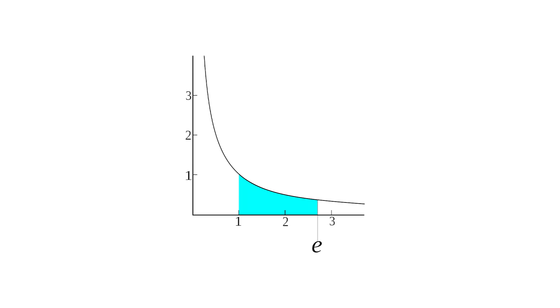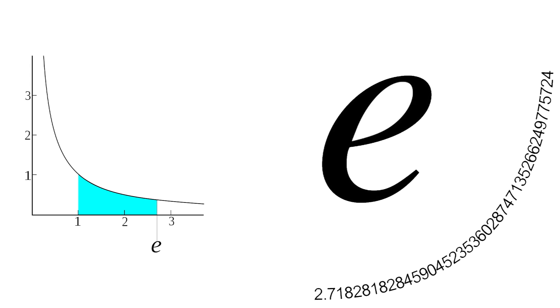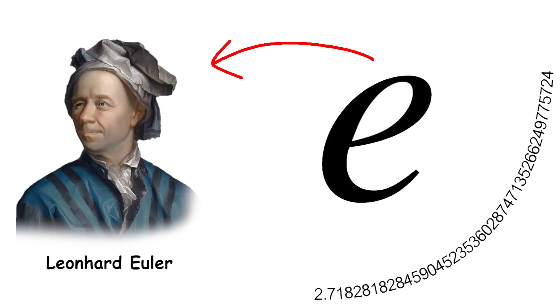The mathematical constant e is the base of the natural logarithm, a fundamental logarithmic function. It is also known as Euler's number. It is named after the mathematician Leonhard Euler, who extensively studied this constant. E is approximately equal to 2.718.